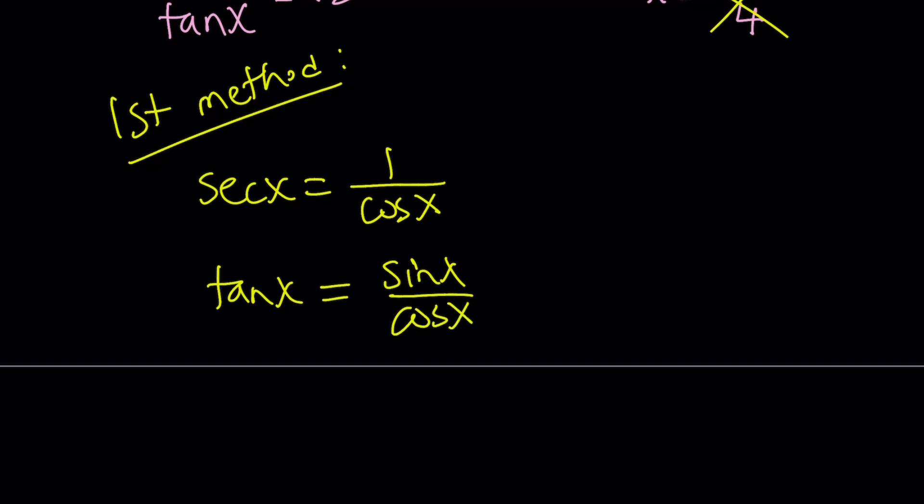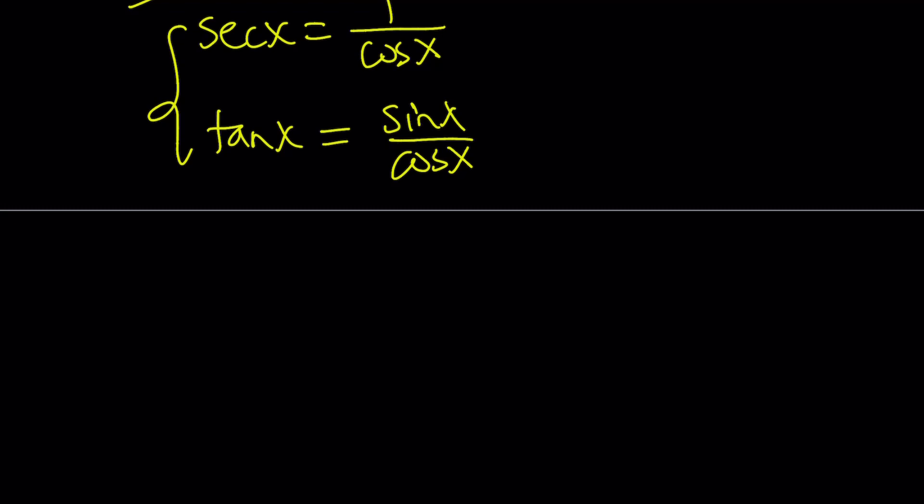Now let's go ahead and put these in, plug these into the expression. Remember, we had secant over tangent equals square root of 2. So let's go ahead and replace secant with 1 over cosine, and tangent with sine over cosine.